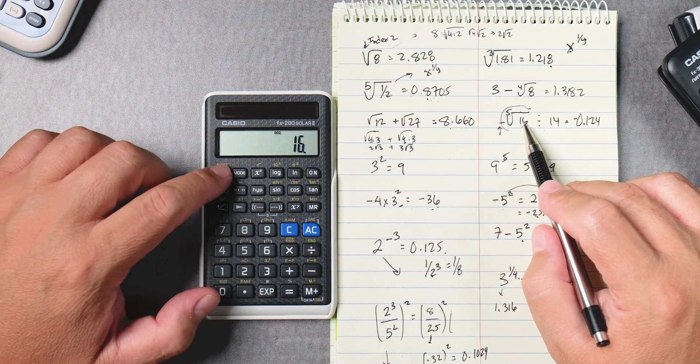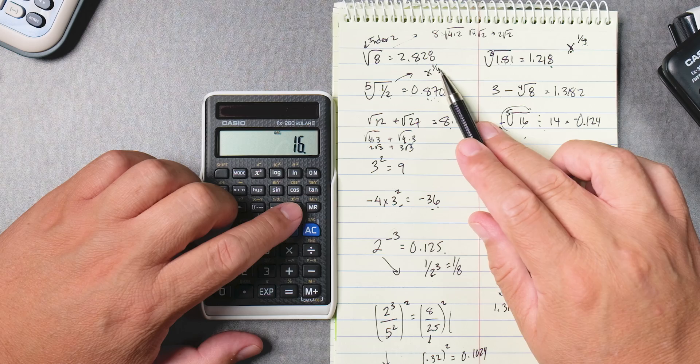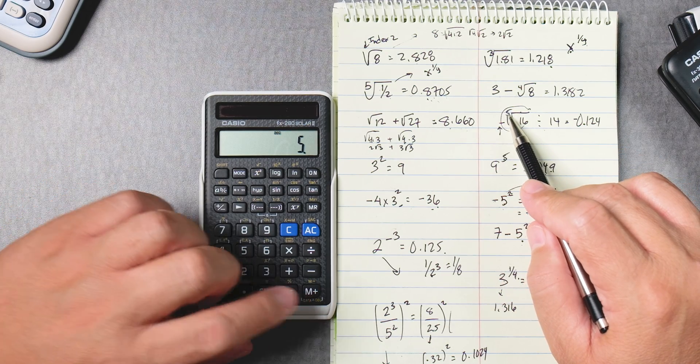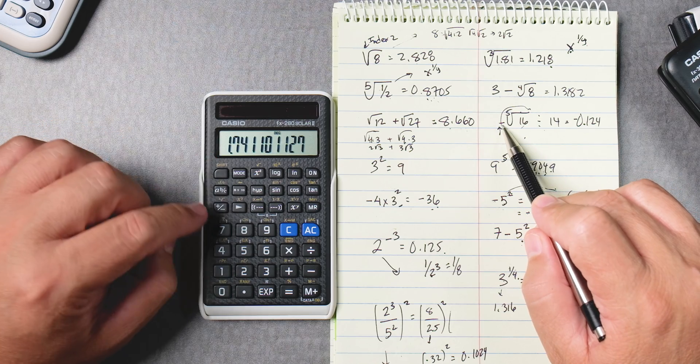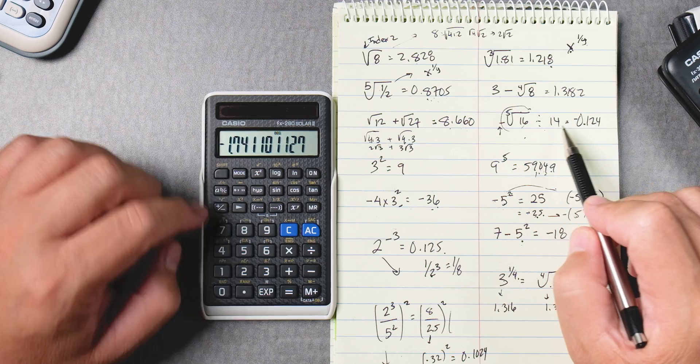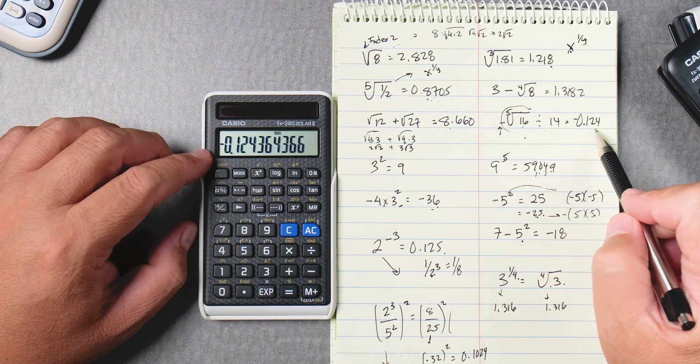Okay what I need to do is I need to do this math first which is the 16, right, and then we're going to go shift x to the y because it's going to give me the x to the 1y power. I'm going to type in the 5 and then we're going to press equals to give me the answer. Then I'm going to put the negative in front of that. I'm going to divide by 14 equals and negative 0.124.